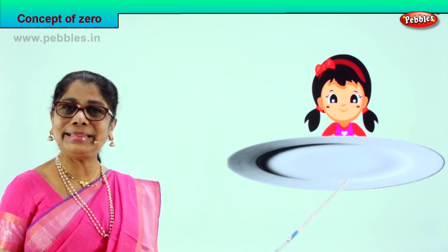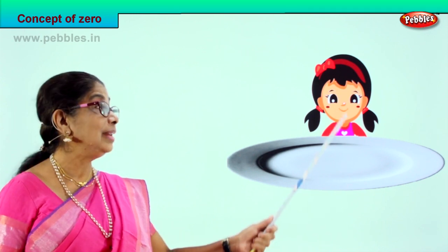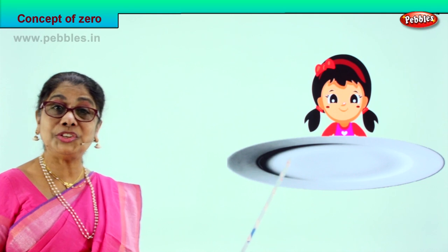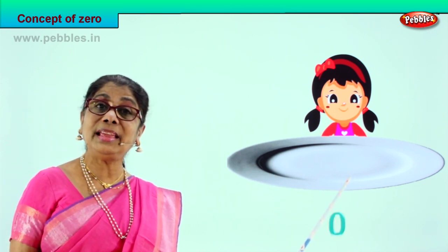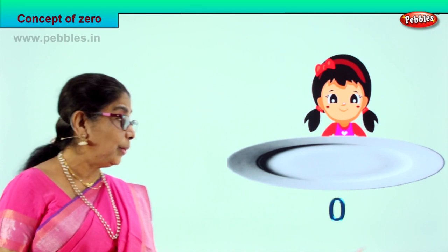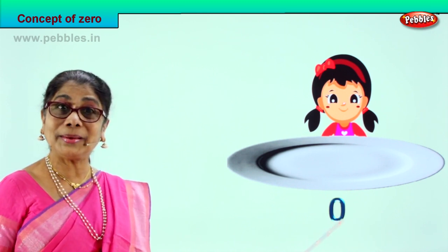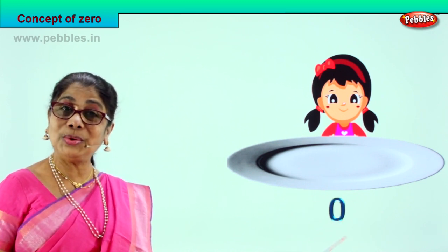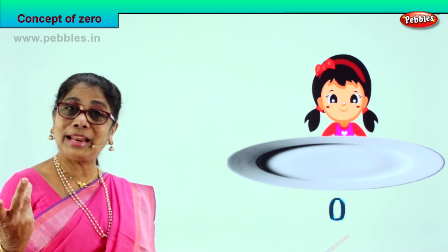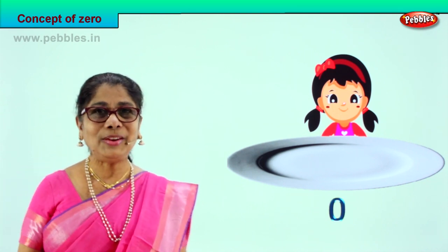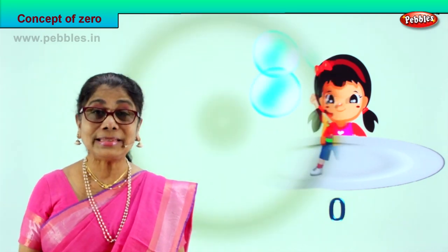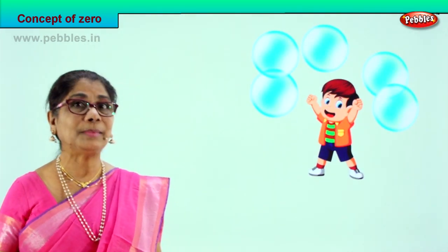The plate is empty. There were three juicy mangoes — she came in and emptied it, she ate all three. So what is in the plate now? How many are there? Zero. So we write zero here. Empty plate, zero, nothing, no mangoes left.